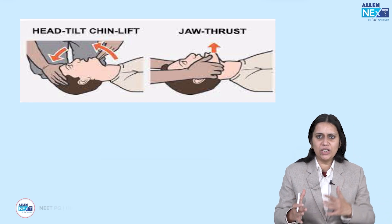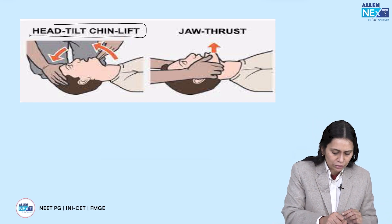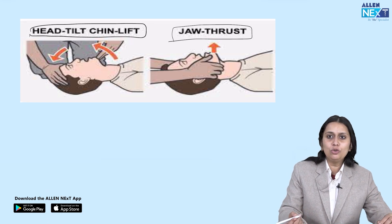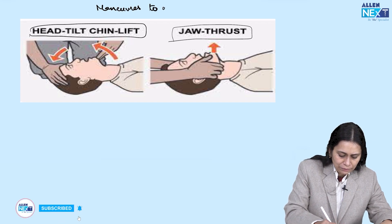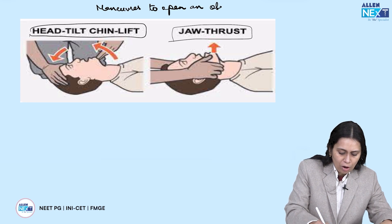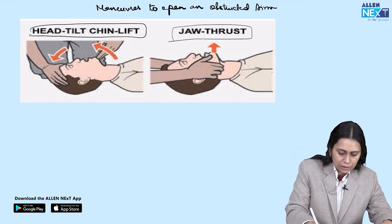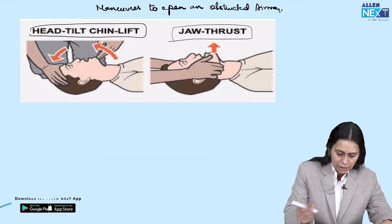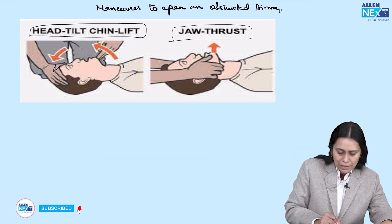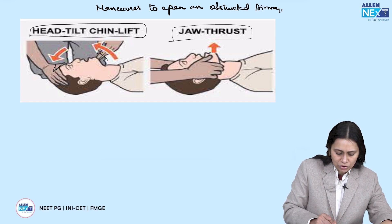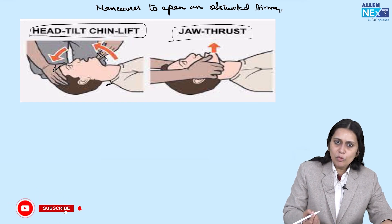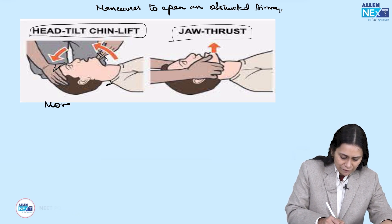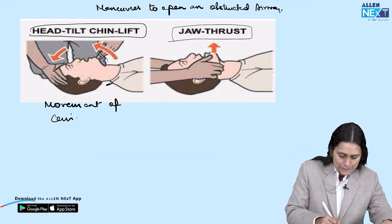The two very important manoeuvres to open an obstructed airway are head tilt chin lift and jaw thrust. In head tilt chin lift, you tilt the head backward with one hand and lift the chin upward with the other. However, there is a movement on the cervical spine with this manoeuvre.